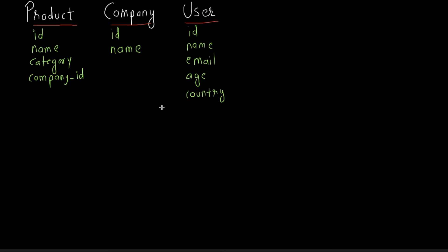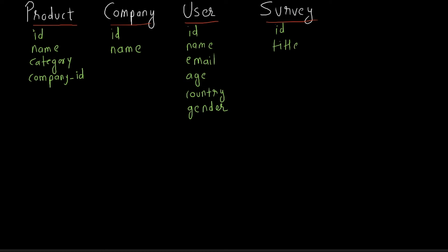The 'user' table will have columns: id, name, email, age, country, and gender. Remember the larger picture — our database purpose is to generate reports based on user demographics, which dictates the columns we choose. For example, if the business wants to know how many female users are purchasing a particular product, the gender column is required. The selection of columns is dictated both by functional requirements and the broader purpose of the database. The next table is 'survey' with columns: id and title.